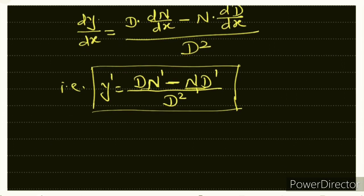To remember the sequence: think of A, B, C, D — D comes first. So write D (denominator) as it is, into derivative of numerator, minus numerator as it is into derivative of denominator, upon D square. I hope now you won't get this formula wrong.